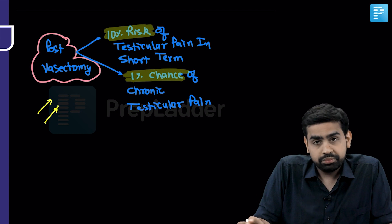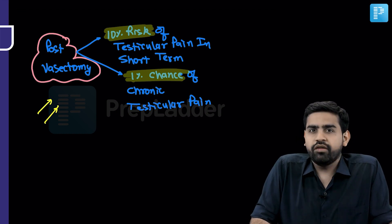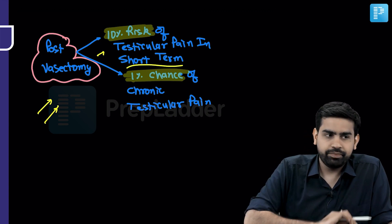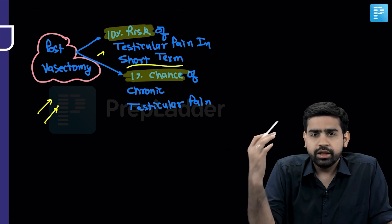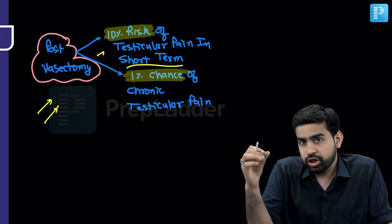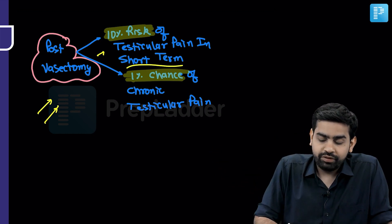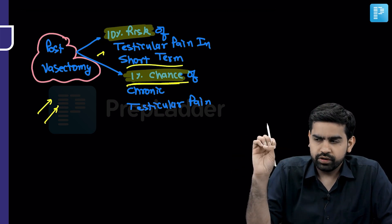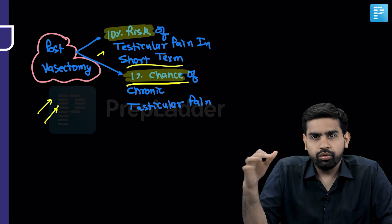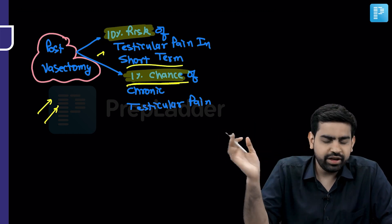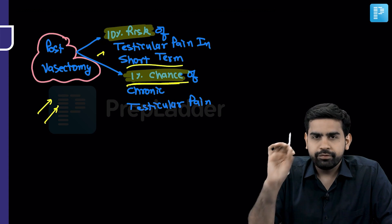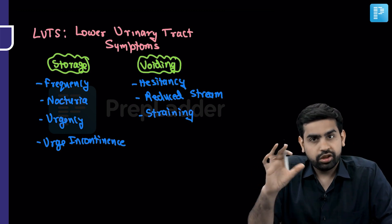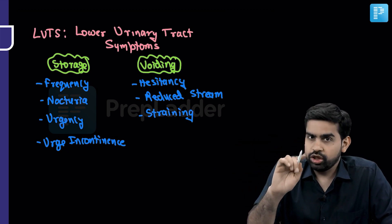Post-vasectomy pain can also occur. Around 10% of patients may have testicular pain in the short term — in the weeks after the operation. But over a longer period, only 1% of patients might have chronic testicular pain. Various pathogeneses have been proposed, but what you need to understand is that yes, post-vasectomy pain can occur — more common acutely at 10%, and only 1% chronically.